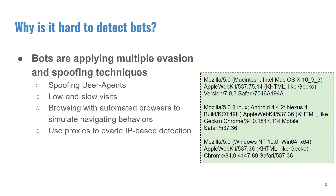There are also various evasion techniques that make bot detection even harder. For example, web bots can change their user agent headers to pretend to be human users, browse with an automated browser to simulate clicking or navigating behavior, or use a proxy to constantly change IP addresses, preventing IP-based blocking.